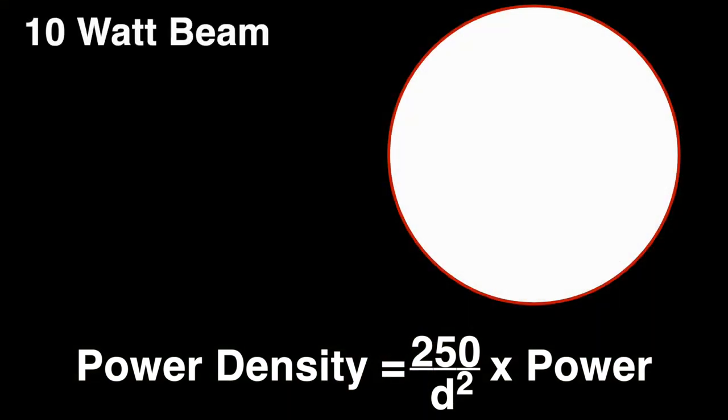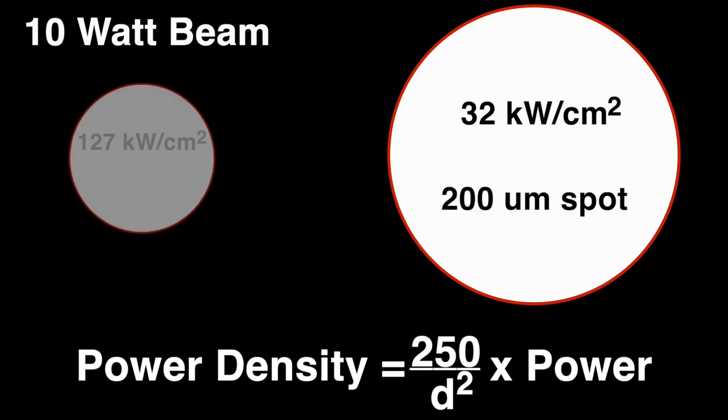A 10-watt beam can create an average power density of 32 kilowatts per centimeter squared if focused to a 200-micron spot, or 127 kilowatts per centimeter squared average power density if focused to a 100-micron spot.